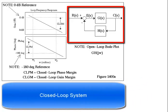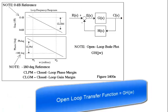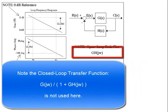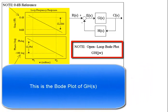Here is the closed-loop system with an open-loop transfer function g times h. Note the closed-loop transfer function g over 1 plus g h is not used here. This is the Bode plot of g h.